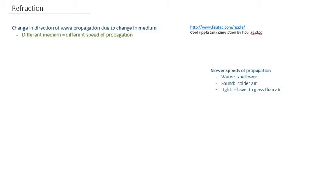For water waves, a shallower medium has a slower speed of propagation, so shallow water. For a sound wave, colder air is slower than warmer air. And for a light wave, traveling through glass is a slower speed of propagation than traveling through air.